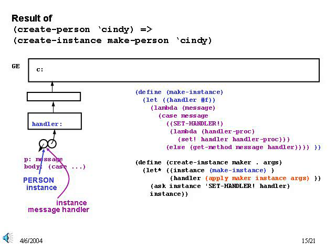As we have seen previously, the instance diagram is an abstract representation of objects and relationships between object instances. These objects also have a concrete representation in our Scheme system. Let's remind ourselves, step by step, of how the Scheme representation of a person is created in the environment model. We begin with the createPerson call, which just results in a call to createInstance, as shown here.